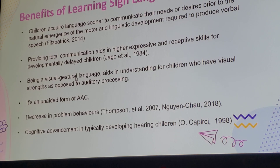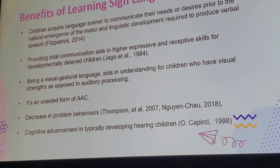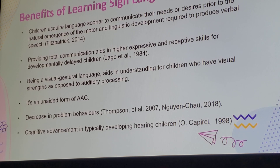Being a visual-gestural language, sign language aids in understanding for children who have visual strengths as opposed to auditory processing strengths. Visual supports — like signs or objects — can support understanding for children who have difficulty with auditory processing. This is why it is used a lot with children at the Down Syndrome Resource Foundation and with kids with autism who have strengths in visual skills.